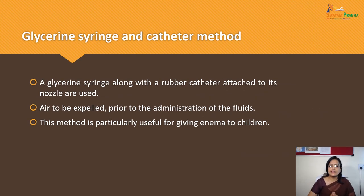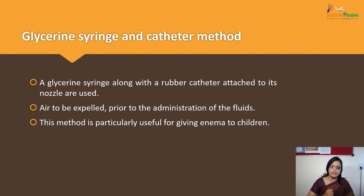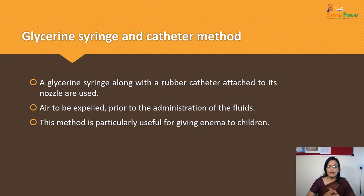For the glycerin syringe and catheter method, a glycerin syringe along with a rubber catheter attached to nozzles is used. The air is expelled prior to administration of the fluid. This method is particularly useful for giving Enema to children.